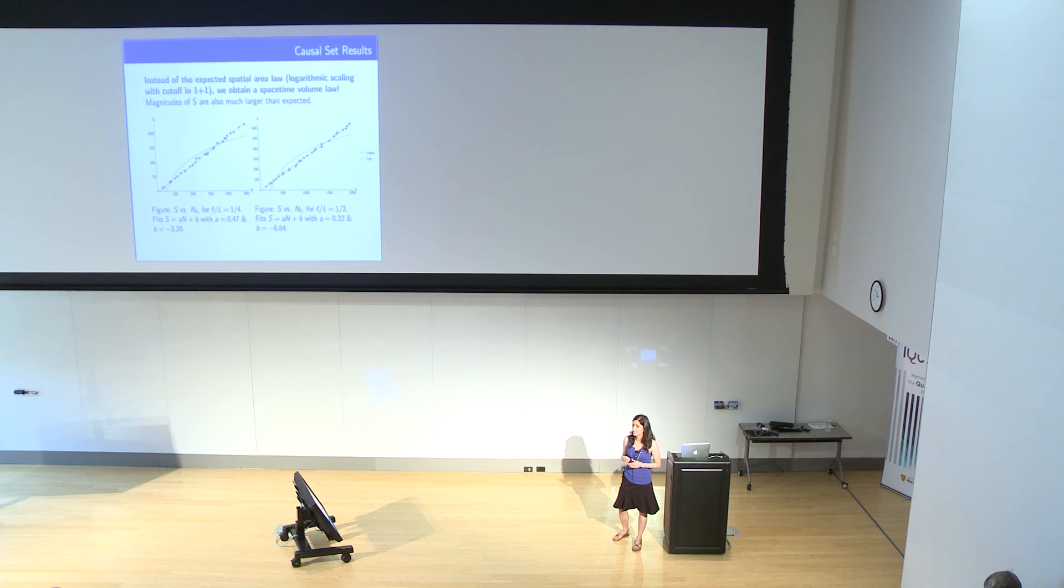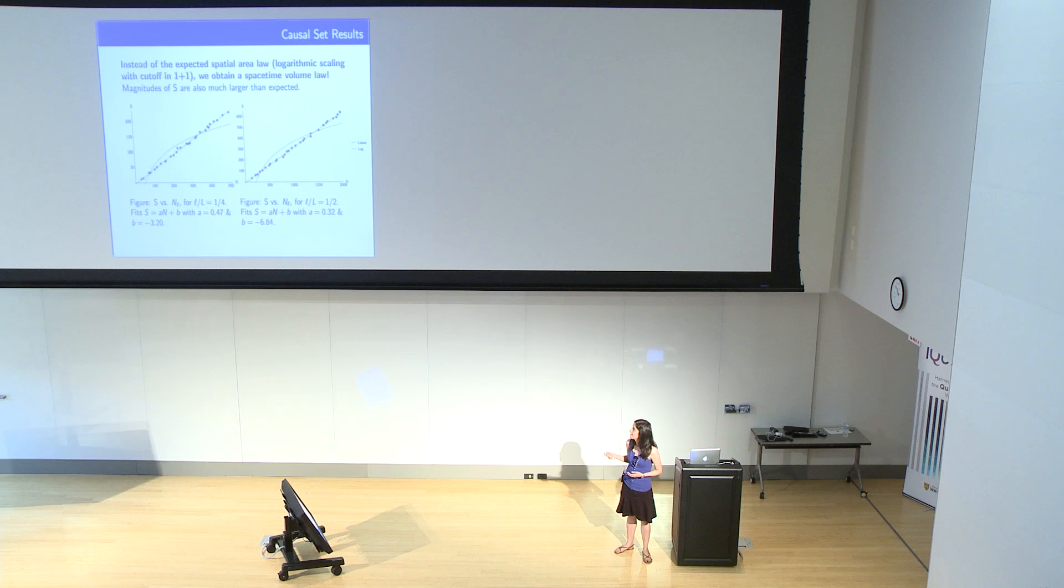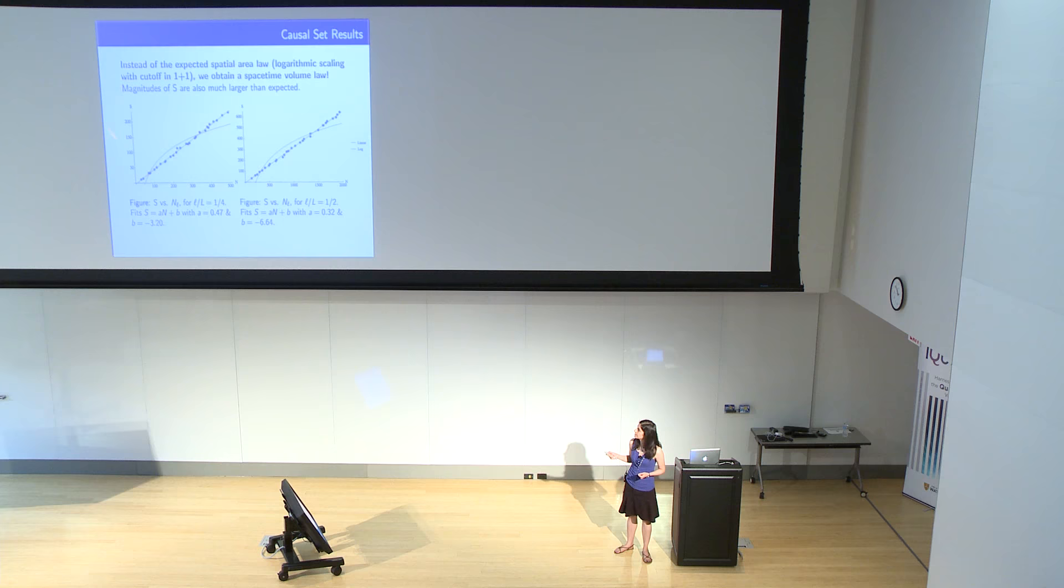Here's the result that we get for the entropy in the causal set case. The entropy scales linearly with the number of elements in the smaller diamond. I told you that the cutoff scales with square root n, so we were expecting a logarithmic scaling with square root n, which would also mean a logarithmic scaling with n itself, but we're getting a linear scaling with n. Not only is the scaling different from what we expected, but the magnitudes of the entropies are also much larger than they were in the continuum case. This is the result that had been puzzling us for a long time.